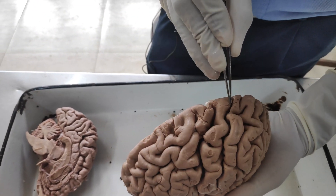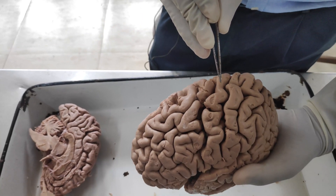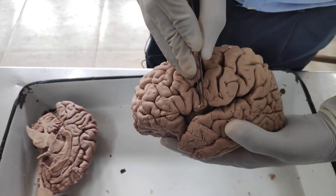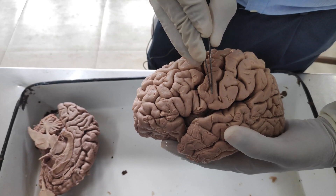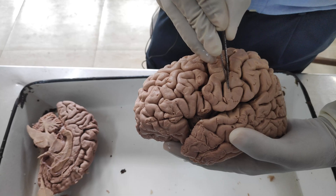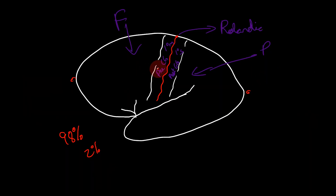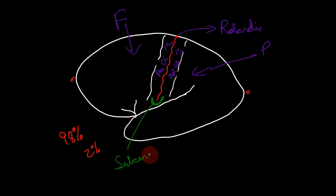The central sulcus characteristically cuts the superomedial border and does not intersect the sylvian fissure. There is a gyrus bridging between the precentral and postcentral gyri, running just underneath the central sulcus and just above the sylvian fissure. It looks like a U connecting the two gyri, and this is known as the subcentral gyrus — because it is below the central sulcus. It is also known as the pli de passage of Broca, or the subcentral gyrus of Broca.